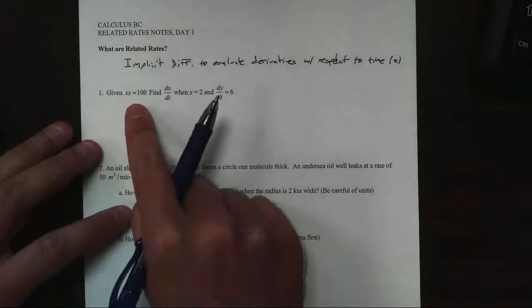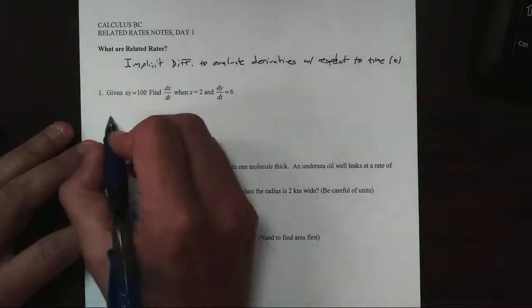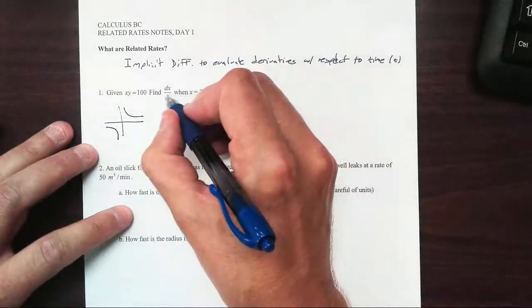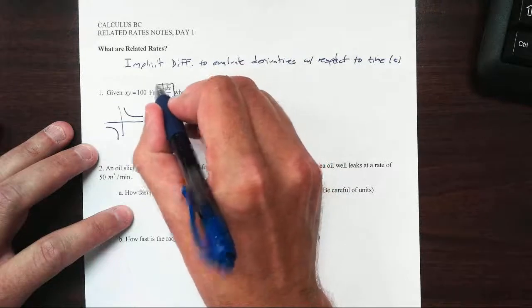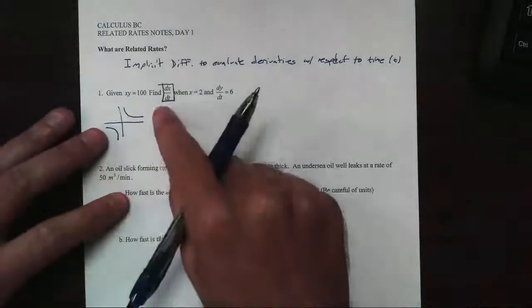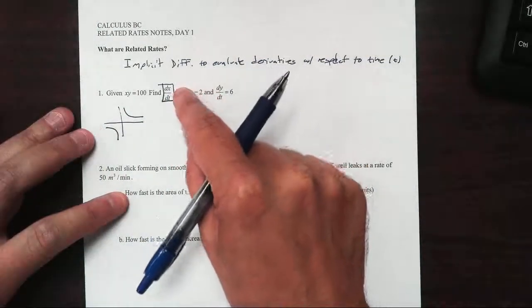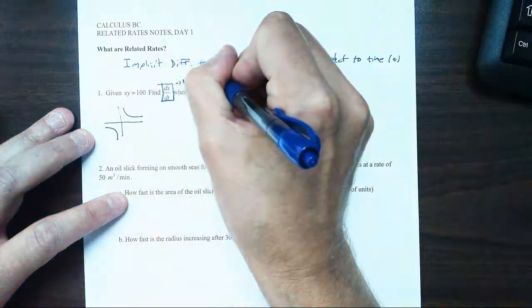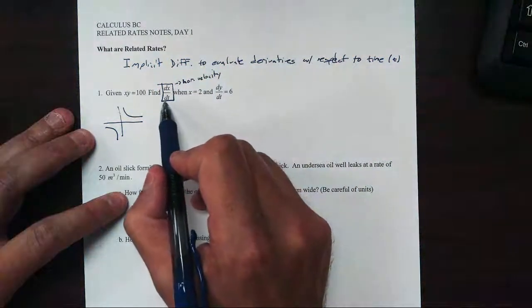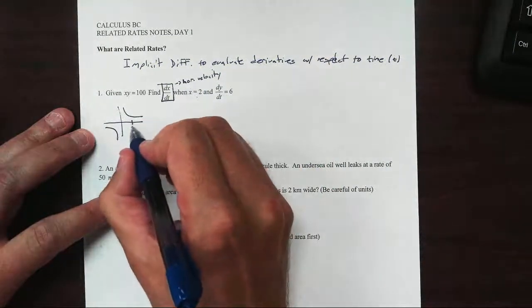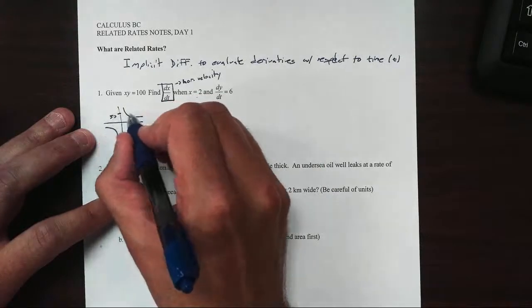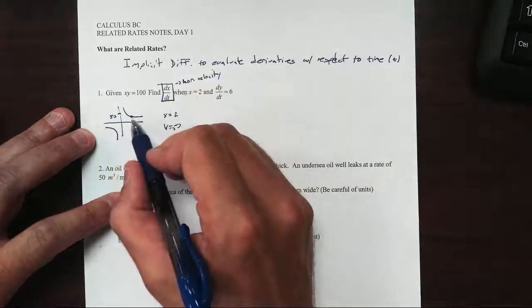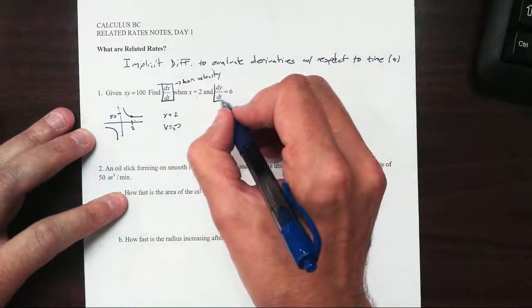We've got an example down here. If you imagine this function xy equals 100, we can graph this and see what it looks like. It says find dx/dt. This is not like our normal slope dy/dx. This is dx/dt - the change in x over the change in time. We're looking at how fast this particle is moving in a horizontal direction when x equals 2, so y is 50. We're looking for what's happening at this point.